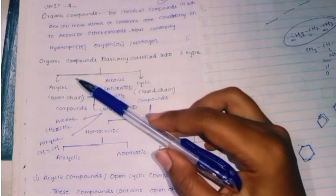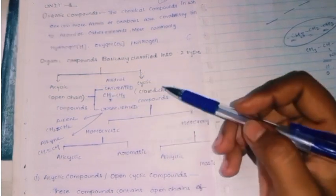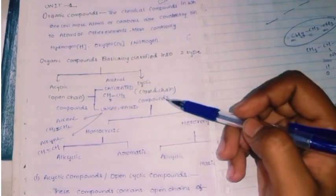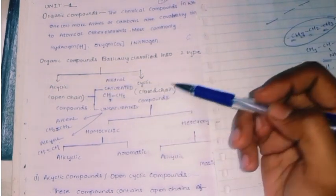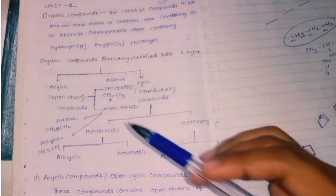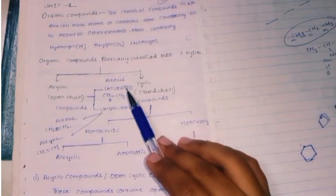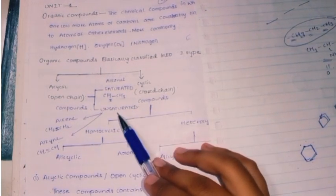So acyclic means open-chain compounds, and cyclic means closed-chain compounds. Now, acyclic is divided into saturated and unsaturated — two types.